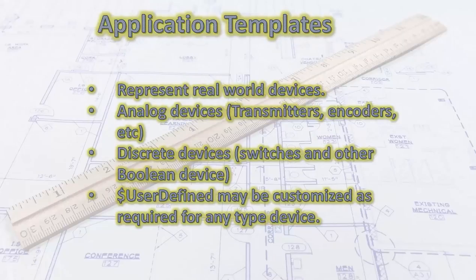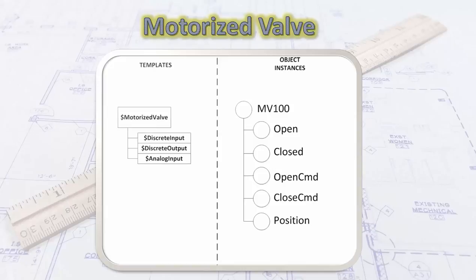Application templates represent real-world devices: analog devices like transmitters and encoders, discrete devices like switches and other boolean devices. A user-defined template may be customized as required for any type of device. For example, we could use a user-defined template to create a motorized valve template.